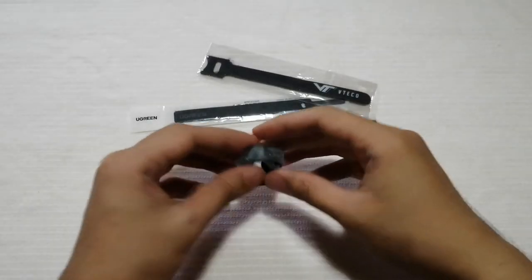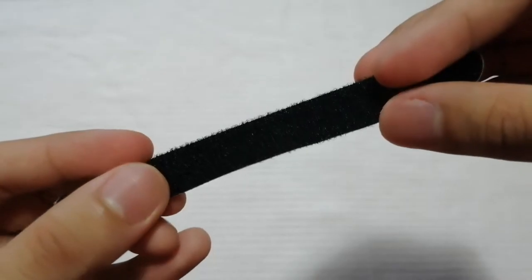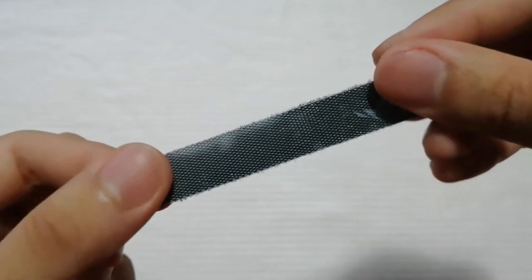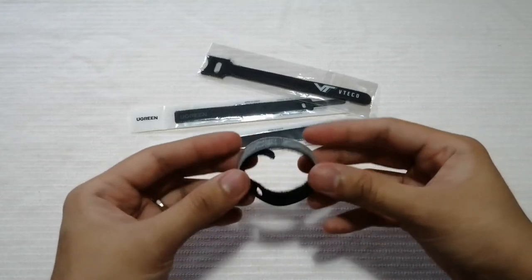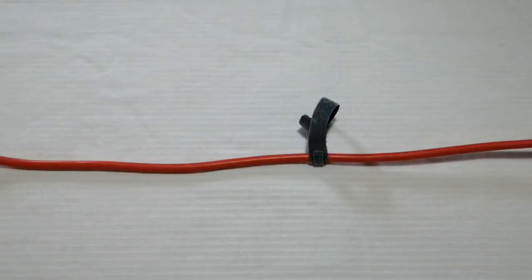Velcro straps are characterized by a fabric strip where one side has hair-like mesh and the other has tiny flexible hooks, which enables the strap to be fastened in a loop and bind cables temporarily. It can also be bound to a cable.